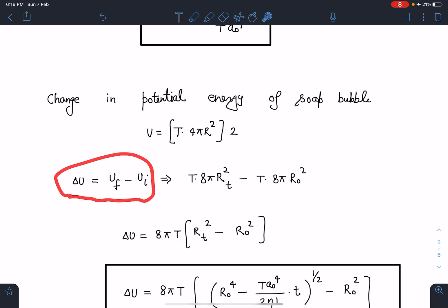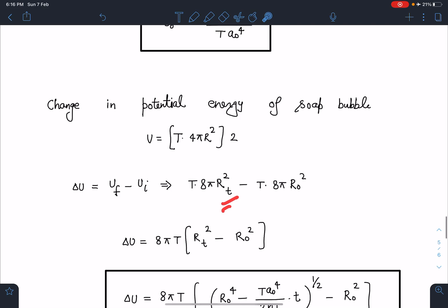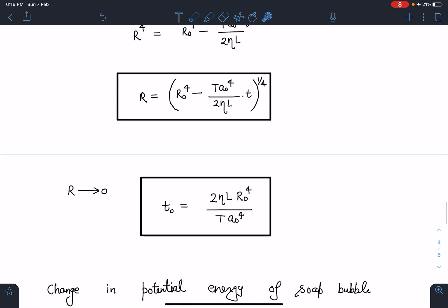So T × 4πR² multiplied by 2 because of two layers. Now I can write here change in surface energy, that is Uₓ - Uᵢ. I can write it as T × 8π(R²ₜ - R₀²).